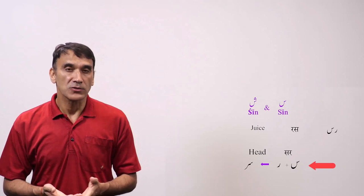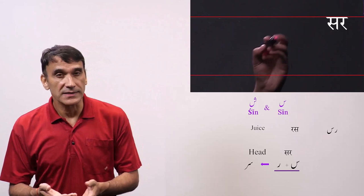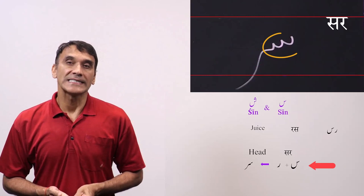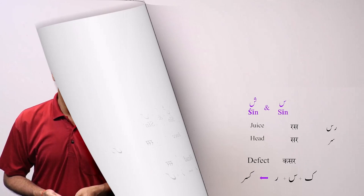In the next word, the letter seen comes in the beginning and connects to the next letter. The word is ser, meaning head. The spelling is seen plus re. The first letter is seen. So you write the initial form of the letter and connect it to re. So seen plus re, ser. You can see that seen has only the first part of the letter because it will be connected to the next one.